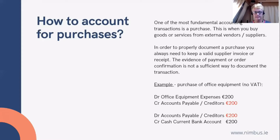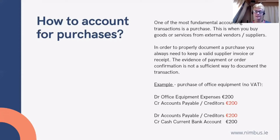Example of proper accounting for a purchase transaction: you purchased office equipment for €200. The first step — you will debit your expenses, office equipment, and you will credit your accounts payable, your liabilities, because you owe the money to the supplier — €200.